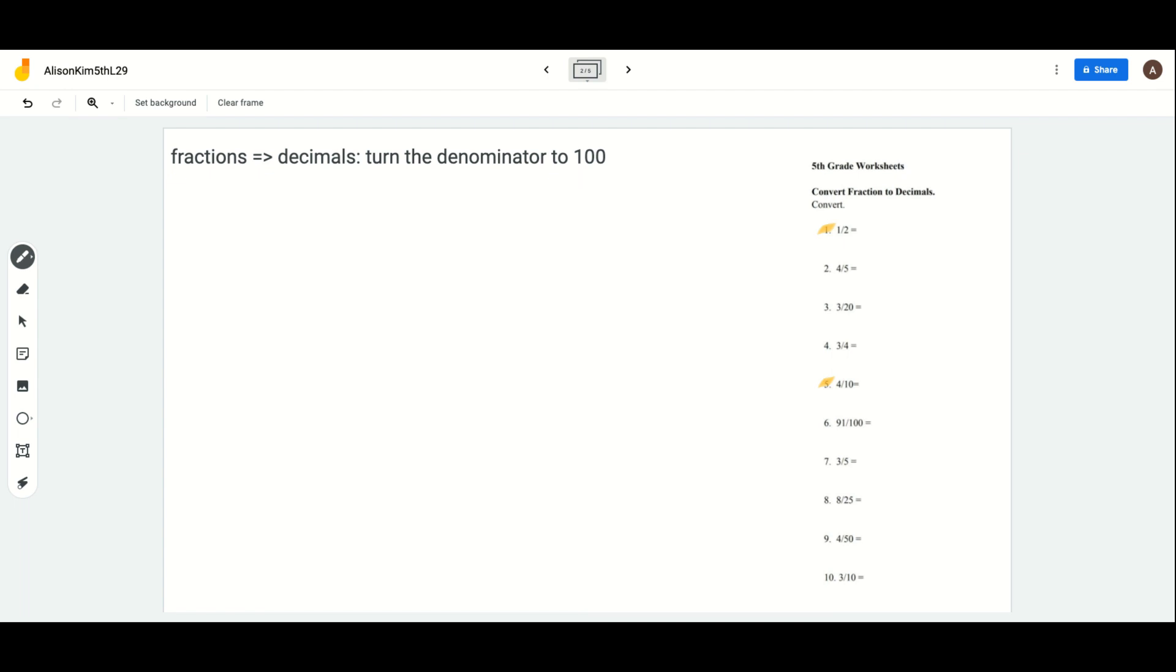The easiest way to turn fractions into decimals is by turning the denominator to 100. That's what we're going to do. But you can always use the safest way, which is just dividing the denominator into the numerator, and that will still give you the same decimal.